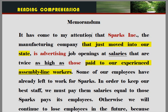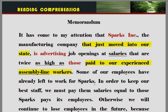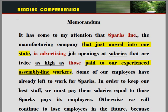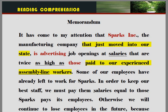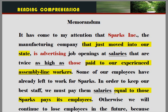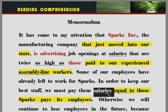우리 직원들 중에 일부 몇몇 사람들이 이미 Sparks사에서 일하기 위해서 떠났습니다. 'In order to keep our best staff, we must pay them salaries equal to those Sparks pays its employees.' In order to — 뭐뭐하기 위해서. 'Staff' — 직원이라고 하는 뜻으로 명사로 쓰이고 있습니다. 우리의 최고의 직원을 붙잡아두기 위해서 우리는 그들에게 어떠어떠한 봉급을 지불해야 합니다. 'Equal to' — 뭐뭐가 동등한. 'Those'라고 하는 것은 앞에 나와 있는 salaries를 나타내는 대명사입니다. Sparks사가 그 직원들에게 지불하는 봉급과 동등한 봉급을 그들에게 지불해야 합니다.